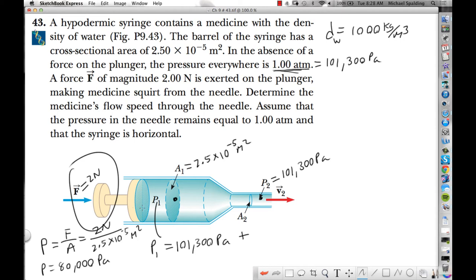So P1, when this force gets applied on the plunger, it's going to be the pressure of the atmosphere plus the 80,000. So P1 is going to be 181,300 pascals.